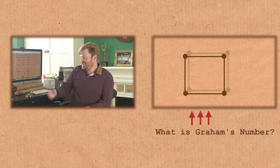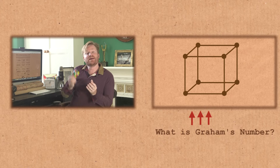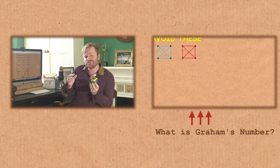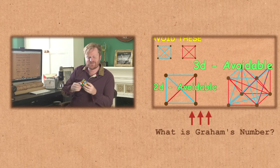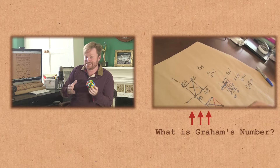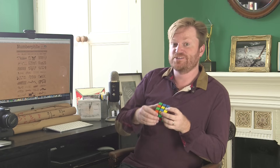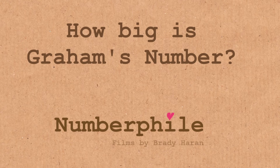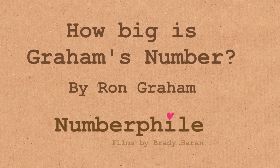Hopefully by now you've seen our video on what Graham's number is. If you haven't, it's the number of dimensions that a cube must exist in before a certain configuration of coloured lines between its vertices must exist. Now this number is famously very, very big. We're going to let the man who first wrapped his head around it, Ron Graham, explain it to you.